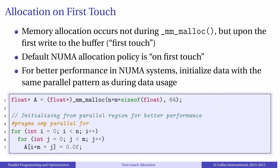The better solution for first-touch is to first touch the array with the same parallel pattern with which you intend to process them. Then the parts of the array touched by CPU1 will end up in the memory local to CPU1, and parts touched by CPU2 will end up in memory local to CPU2. That means that often the most simple optimization you can do for NUMA systems is to initialize the array from a parallel region rather than sequentially.